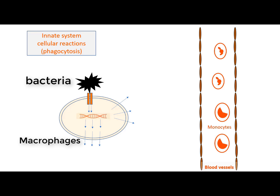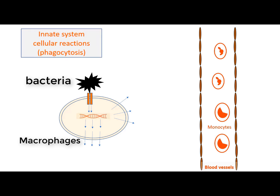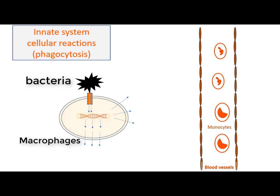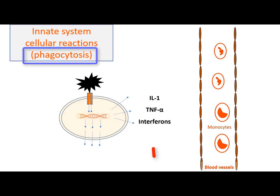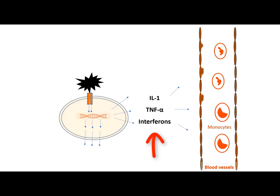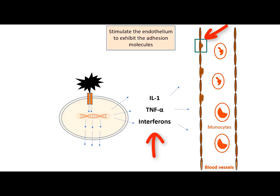Now let's focus on one of the main innate immune system cellular reactions, which is phagocytosis. Firstly, the inflammatory mediators stimulate the endothelium to exhibit the adhesion molecules.